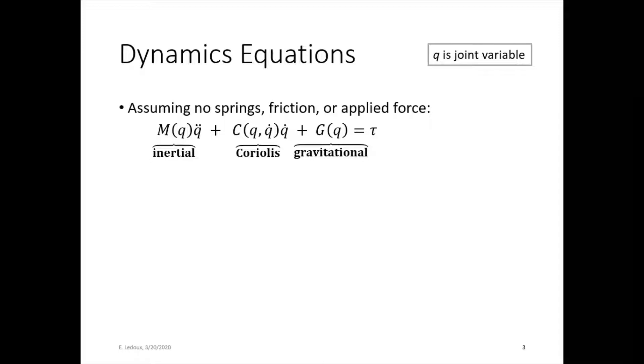Now the Coriolis matrix will only show up if the robot has more than one joint. So if it is just a motor driving a load, then you will only have the M and the G terms. But if you have any more than one joint on your robot, you will probably get a Coriolis term.